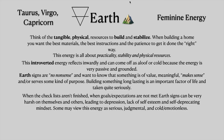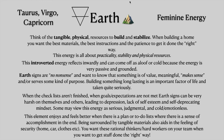When the checklists aren't finished, when goals and expectations are not met, Earth signs can be very harsh on themselves and others, leading to depression, lack of self-esteem, and a self-deprecating mindset. Some may view this energy as serious, judgmental, and cold and emotionless. This element enjoys and feels better when there is a plan or to-do list where there is a sense of accomplishment in the end. Being surrounded by tangible materials also aids in the feeling of security — this could be home, car, clothes, etc. You want these rational thinkers and hard workers on your team when you want to get stuff done the right way.